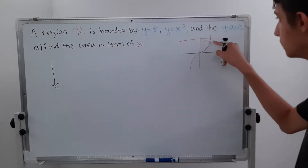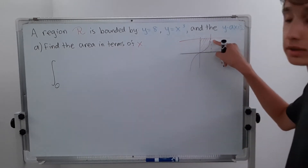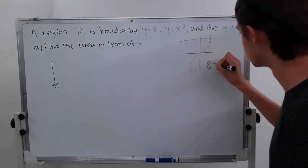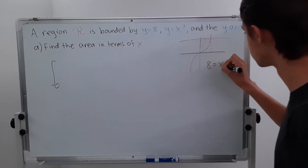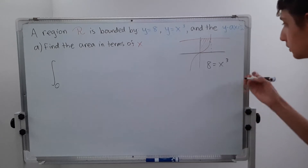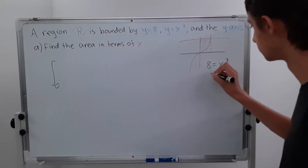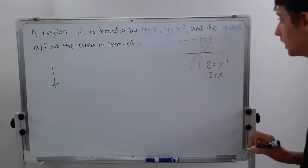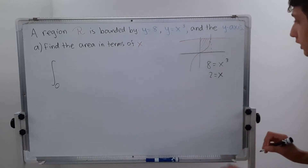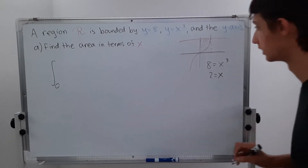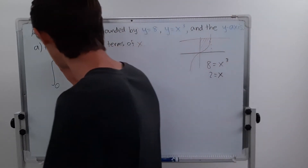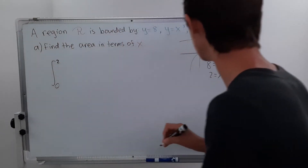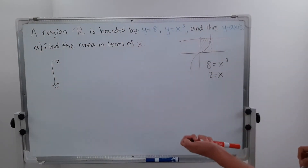We want to find the point of intersection between these two curves. So we set 8 equal to x cubed. The cube root of 8 is just 2, so x equals 2. And so it goes from 0 to 2.